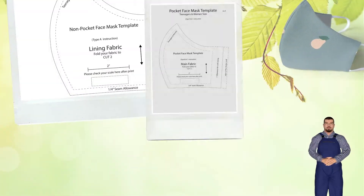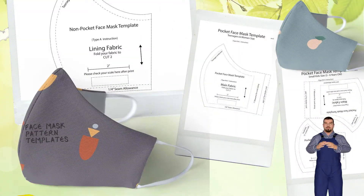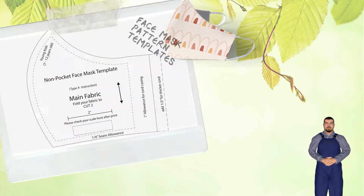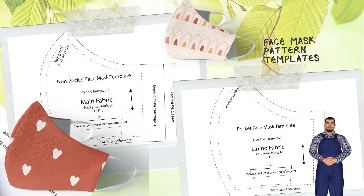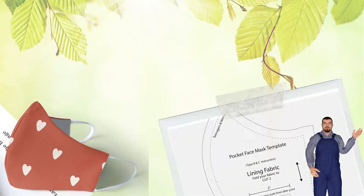5. Silhouette Machine Studio 3 files with 1/4 inch seam allowance included. Use only on Type A, all four sizes, in a zip file.